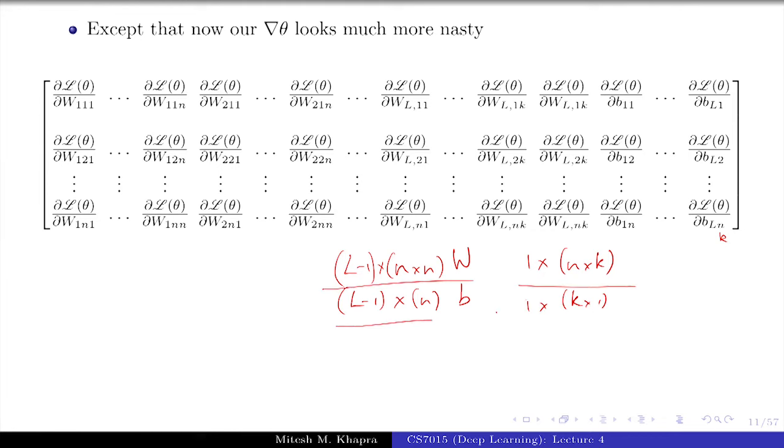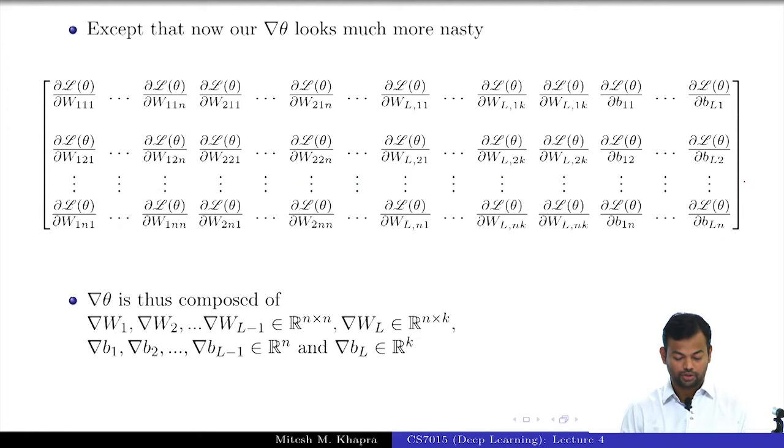These are all the number of parameters that you have, and this is exactly what the size of this matrix is. It has all these parameters and you need to compute the partial derivative with respect to each of these parameters. This is what grad theta is composed of—it is composed of the partial derivatives with respect to all the parameters of your network.